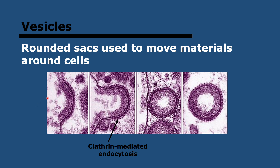Finally for HL, we have vesicles. Vesicles are rounded sacs made of a single layer of membrane — you can see it clearly here — enclosing material inside. They are continuously made and merged with the plasma membrane. They're made by pinching off from a larger membrane, normally the plasma membrane — and remember, that's called endocytosis. It's important to know that endocytosis requires clathrin, a protein which can attach to the plasma membrane and cause it to invaginate and pinch off.